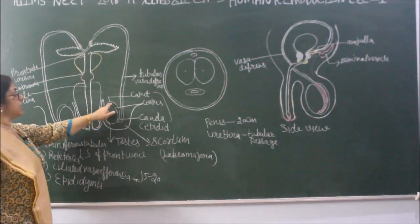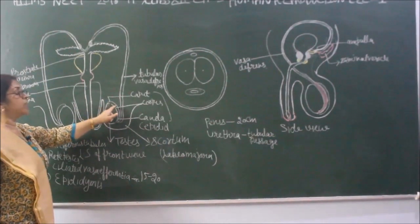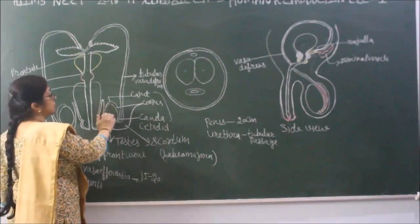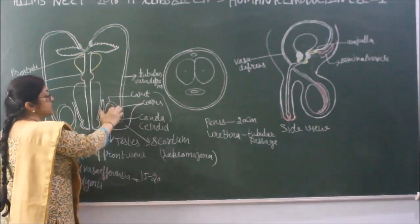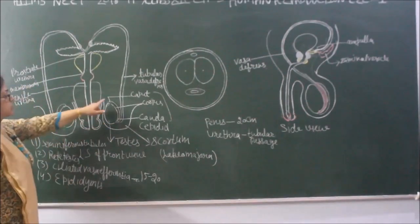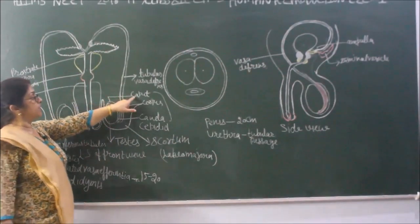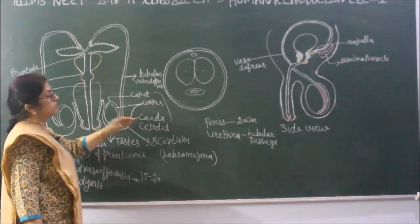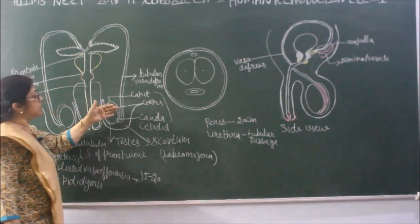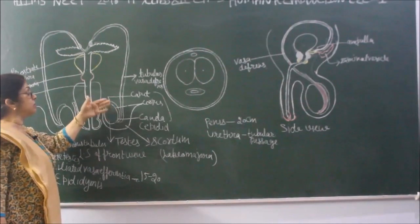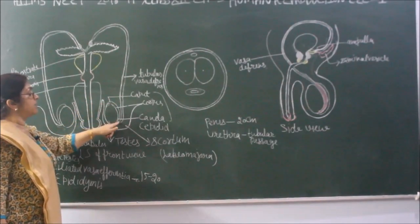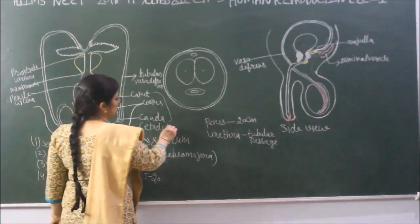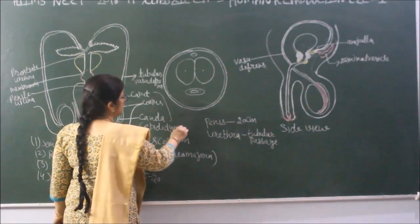The epididymis is also a highly coiled tubular structure that is loosely attached to the testes on the back side. It has three parts: caput, corpus, and cauda. The functions of these three parts include providing nutrition, maturation, and temporary storage of sperms.